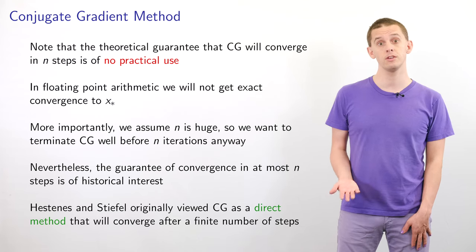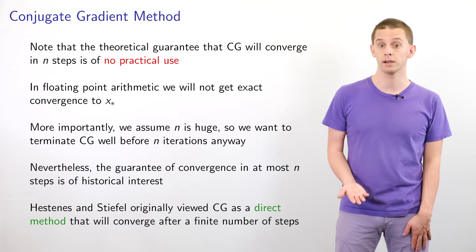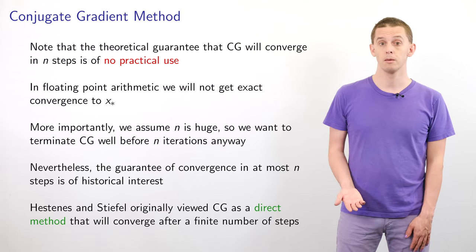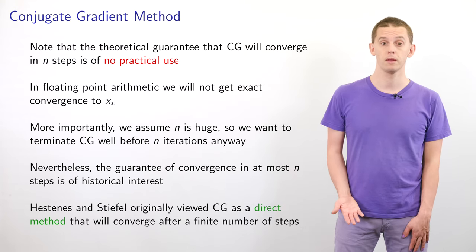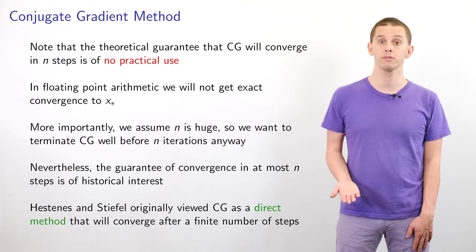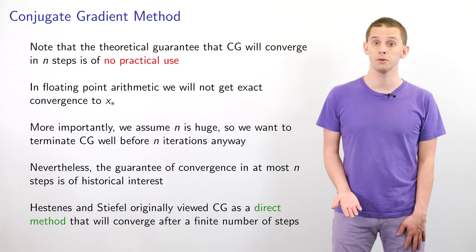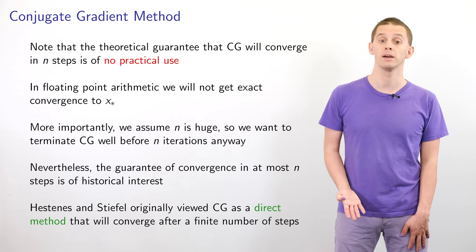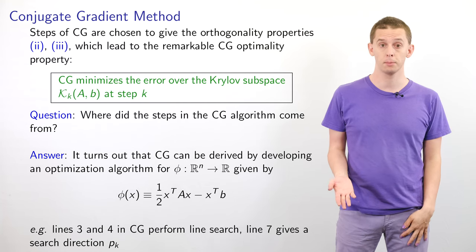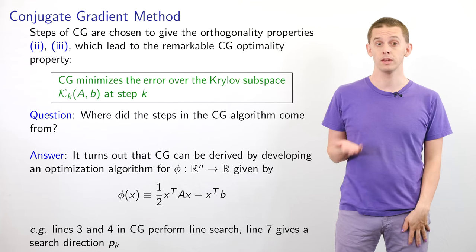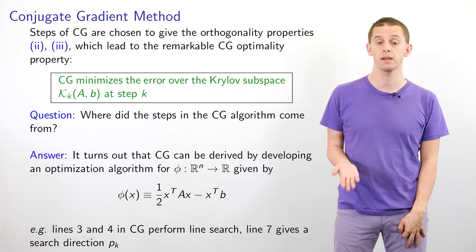Note that the theoretical guarantee that CG will converge in n steps is of no practical use because in floating-point arithmetic we will not get exact convergence to x*. More importantly we assume n is huge, so we want to terminate CG well before n iterations. Nevertheless, Hestenes and Stiefel originally viewed CG as a direct method converging after a finite number of steps.